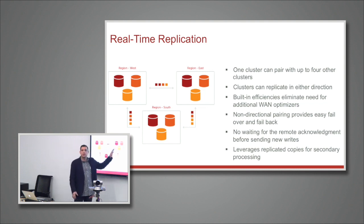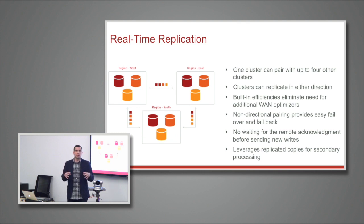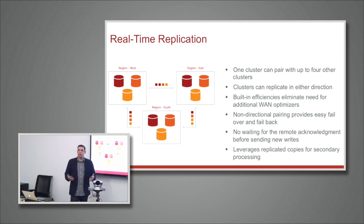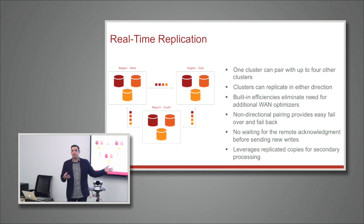We didn't build it so that you have to create lots of pairs and own 20 SANs just to pull it off. In our configuration, we pair up clusters — it's typically a cluster in a data center that will pair up with other clusters. We can pair up to a group of five basically together, so you can do a star topology of five systems that are all paired together and can replicate in any direction.